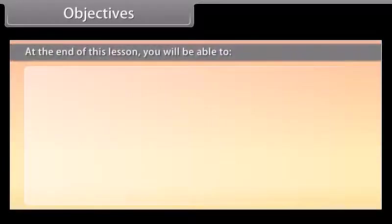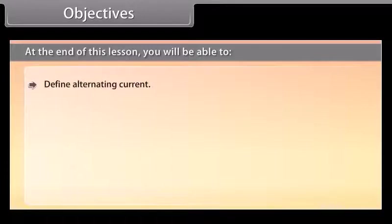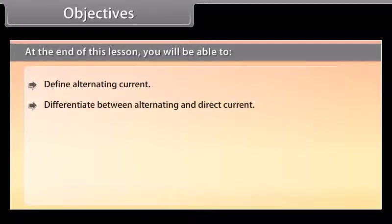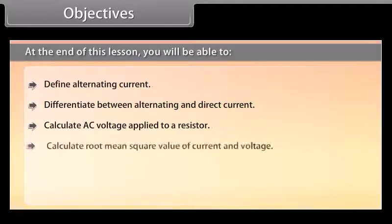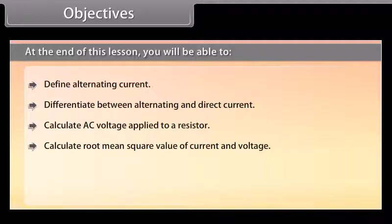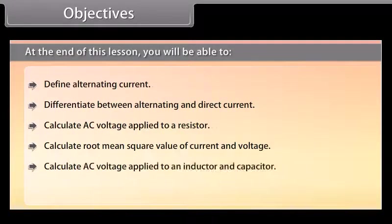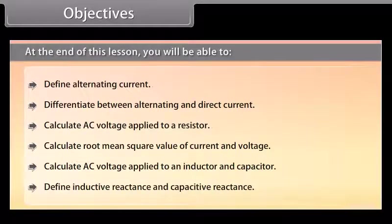At the end of this lesson, you will be able to: define alternating current; differentiate between alternating and direct current; calculate AC voltage applied to a resistor; calculate root mean square value of current and voltage; calculate AC voltage applied to an inductor and capacitor; define inductive reactance and capacitive reactance.